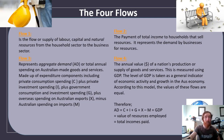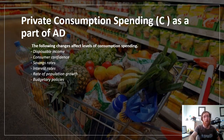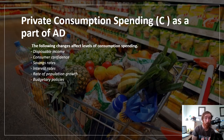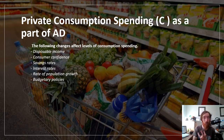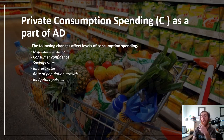When answering questions about aggregate demand, you need to talk about how certain components are impacted and the overall effect on aggregate demand. One of the most common is how private consumption spending changes. The following changes affect consumption spending: levels of disposable income — if that changes, private consumption spending will change and aggregate demand will change. Consumer confidence — how optimistic consumers feel about future employment and incomes — if they feel confident, they'll spend more, so private consumption spending and aggregate demand will increase.